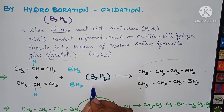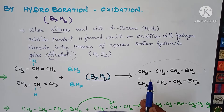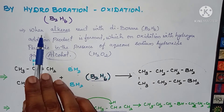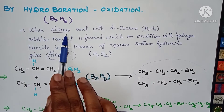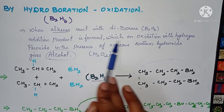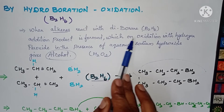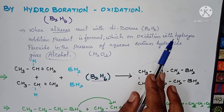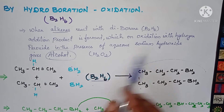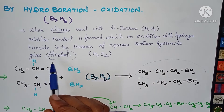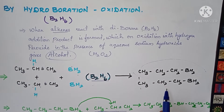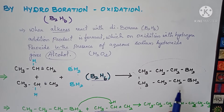Now we are receiving the addition product. When alkene reacts with diborane, an addition product is formed, which on oxidation with hydrogen peroxide in the presence of aqueous sodium hydroxide gives alcohol. We are getting not just one product — we get first, second, and third addition products.